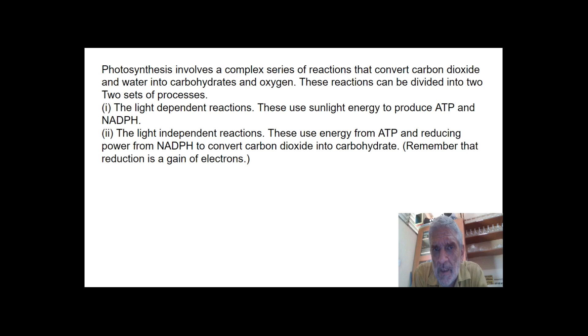So what we're going to look at is photosynthesis involves a complex series of reactions that convert carbon dioxide and water into carbohydrates and oxygen. Notice the hydrogen in the water is used to reduce carbohydrates. And by reduction that can be an addition of hydrogen. These reactions can be divided into two processes: the light-dependent reactions, which use sunlight energy to produce ATP and NADPH. That is the function of the light-dependent reactions. They form ATP and NADPH. That's why they occur.